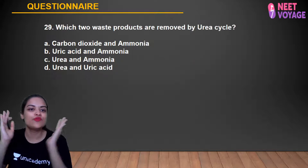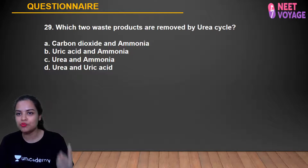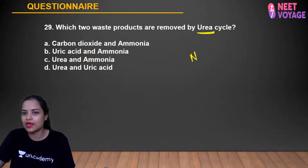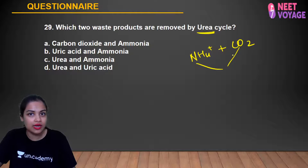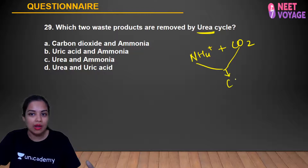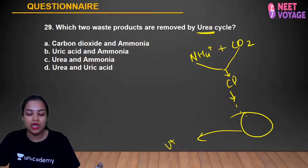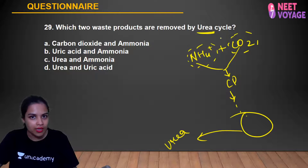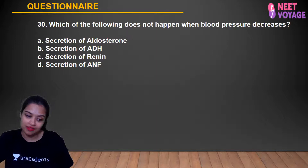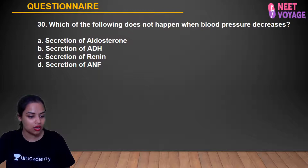Question 29: Which two waste products are removed by the urea cycle? The body first forms NH4+ (ammonium) from nitrogenous waste and CO2. These combine to form carbamoyl phosphate, which enters the urea cycle and ultimately produces urea as a byproduct. So the urea cycle removes both carbon dioxide and ammonia. Alok, Shashank, Anusha, Anshika, and Simran gave the correct answer.